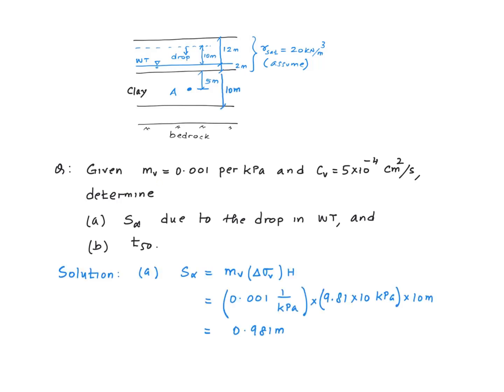Since m sub v is given, we will use this formula for calculating the ultimate settlement. In this formula, the change in the vertical stress equals the change in the pore water pressure due to the water table drop, which is 9.81 multiplied by 10. 9.81 obviously is the unit weight of water. 10 is the drop in water table. And you multiply that by the thickness of the clay layer, which is 10 meters. And I get a value of 0.981 meters for s infinity.